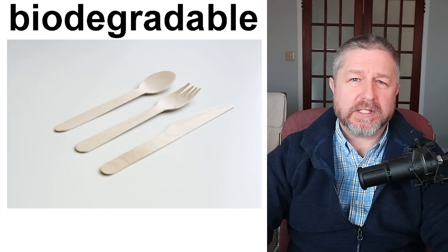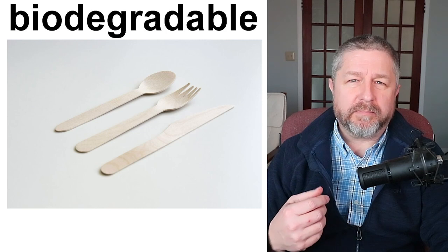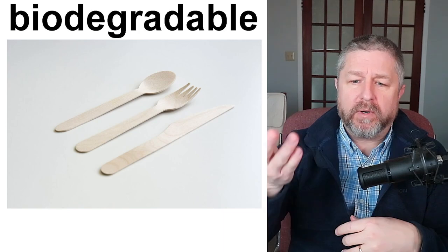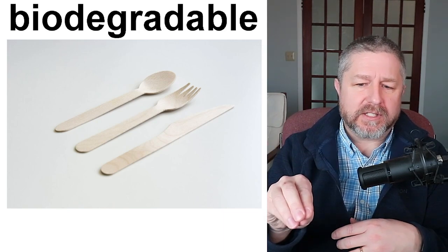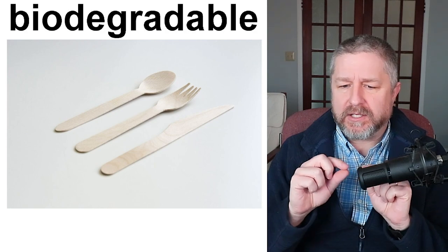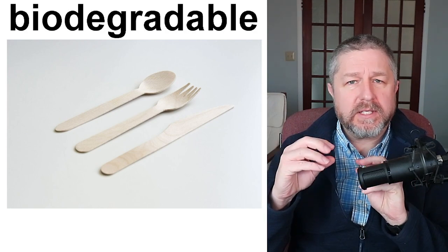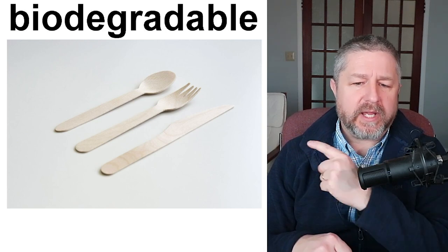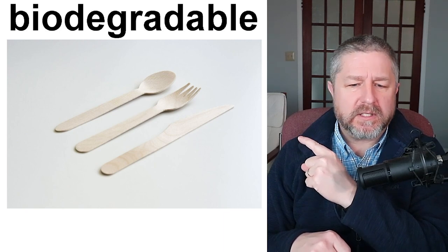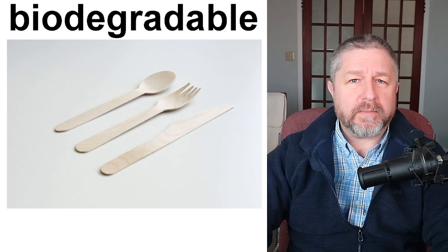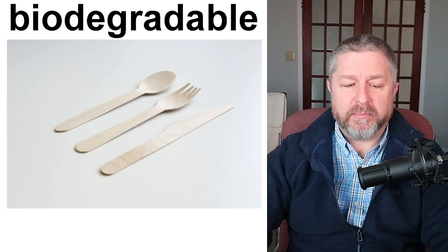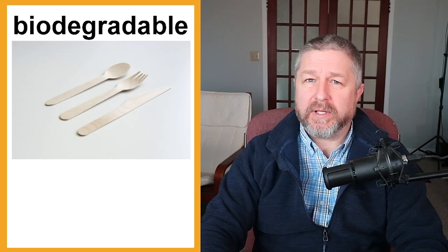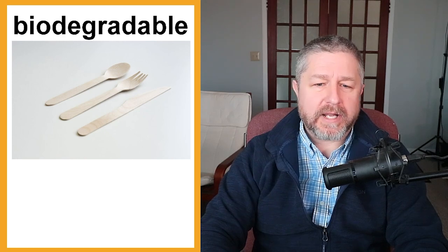We also use more and more things that are biodegradable. When something is biodegradable, it means it's made of all natural substances and if you leave it in the environment, over time it will just decay and disappear. Decay is when something slowly breaks down — bacteria and insects eat it until it's gone. Some biodegradable utensils like spoons, forks, and knives are made out of wood or bamboo. Biodegradable simply means it will decay when left in the environment.